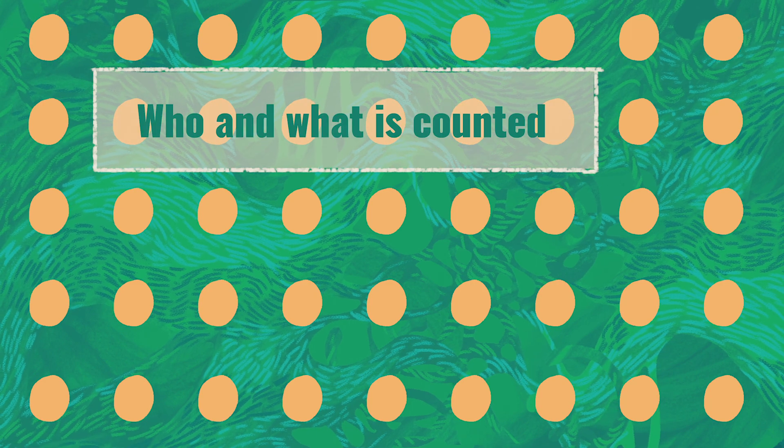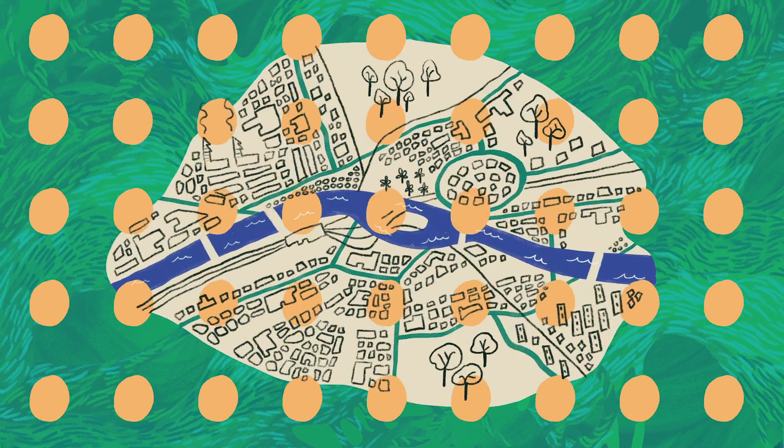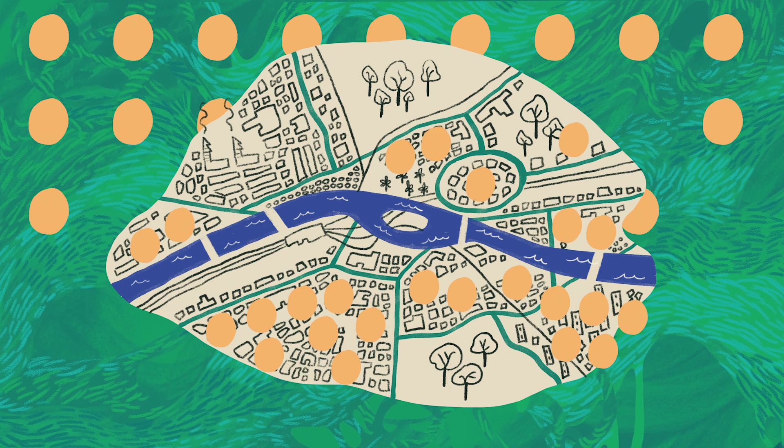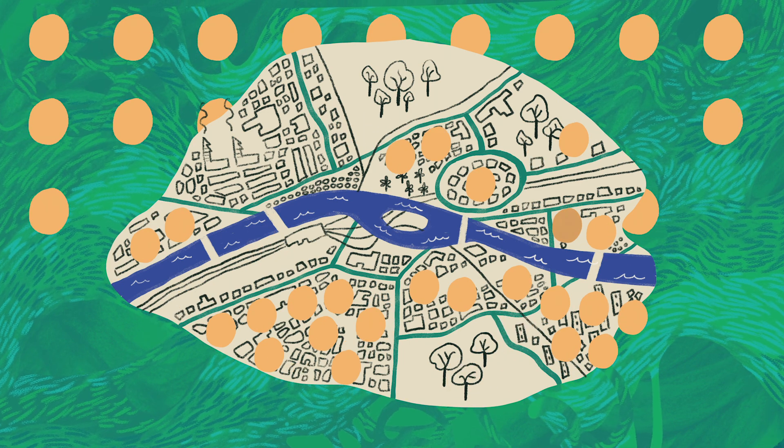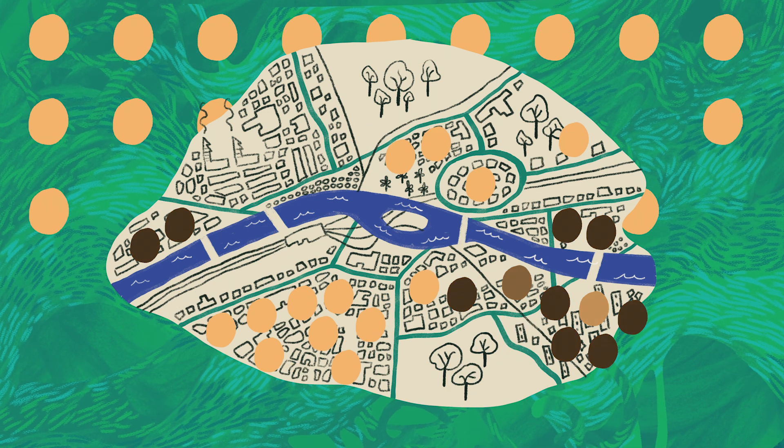Data exclusion occurs in many ways. In the choices about who and what is counted, when governments exclude some groups, for example, people living in informal settlements, from official data collection.